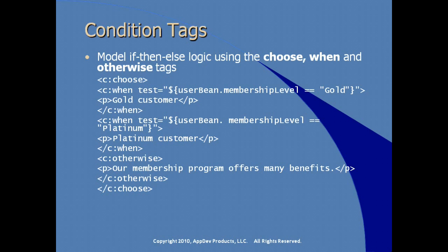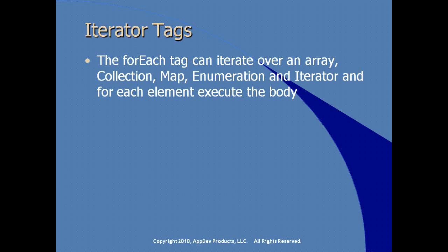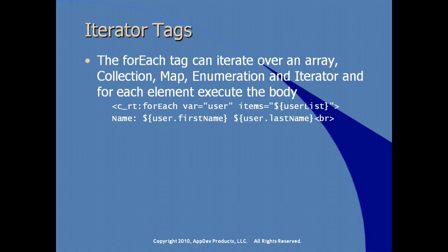We also have iterator tags for looping through lists, collections, and maps. The forEach tag can iterate over an array, collection, map, enumeration, or iterator, and execute the body for each element. Here we see the opening forEach tag — we create a local variable called user, and the list we're iterating is specified in the items attribute. The body of the forEach element prints out a name label and the value of the firstName field of the user object, using the local user variable as it reads through the userList collection.